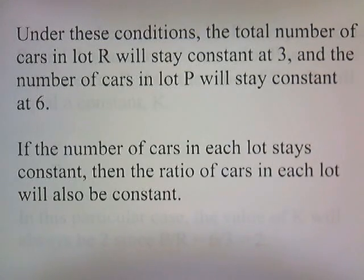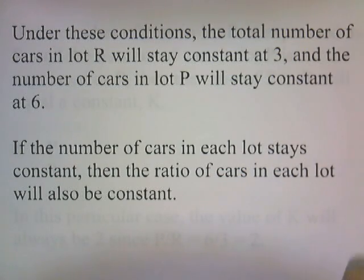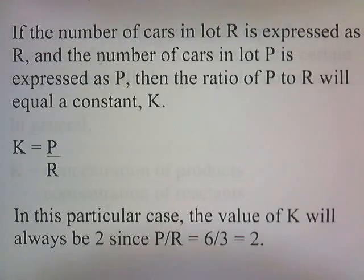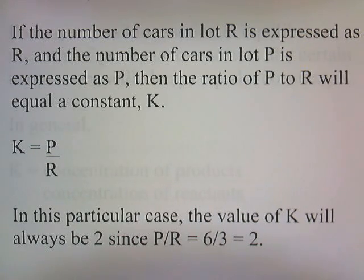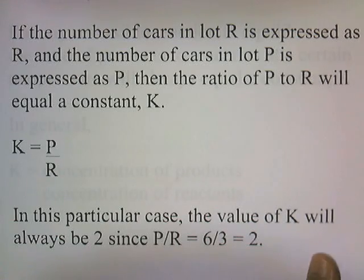Under these conditions, the total number of cars in lot R will stay constant at three, and the total number of cars in lot P will stay constant at six. If the number of cars in each lot stays constant, then the ratio of cars in each lot will also be constant. If the number of cars in lot R is expressed as R and lot P as P, then the ratio of P to R will equal a constant K. So K equals P over R, and in this particular case, K will always be two, since six divided by three equals two.